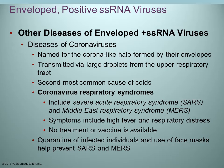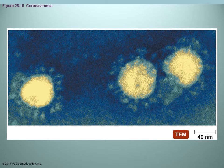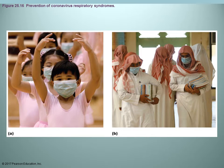There is no vaccine currently available for SARS or MERS. Treatment is just supportive, treating the symptoms. To help prevent spread, it is recommended to use face masks and quarantine infected individuals. This is what the coronavirus looks like — you can see the halo with the spikes. Images show individuals wearing masks to prevent increased spread of infection — one from China with the SARS outbreak and one from the Middle East with MERS, both from the early 2000s.